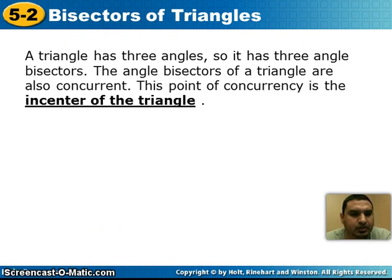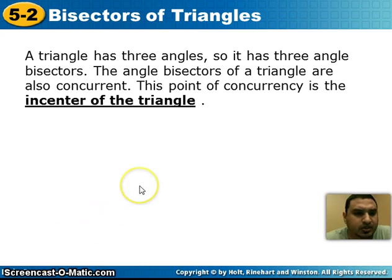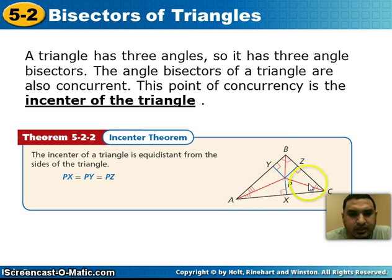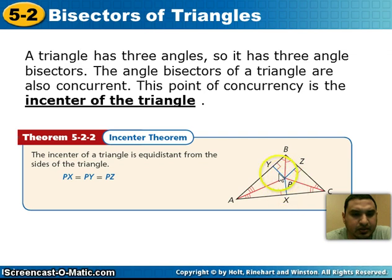Now we're going to talk about angle bisectors. A triangle has 3 angles so it has 3 angle bisectors. The angle bisectors of a triangle are also concurrent. The point of concurrency is called the incenter of the triangle. Looking at this triangle, we bisect each angle, and where those angle bisectors meet is the incenter. The distance from the incenter P to each side of the triangle is equal: the distance from P to X equals the distance from P to Y, which equals the distance from P to Z.